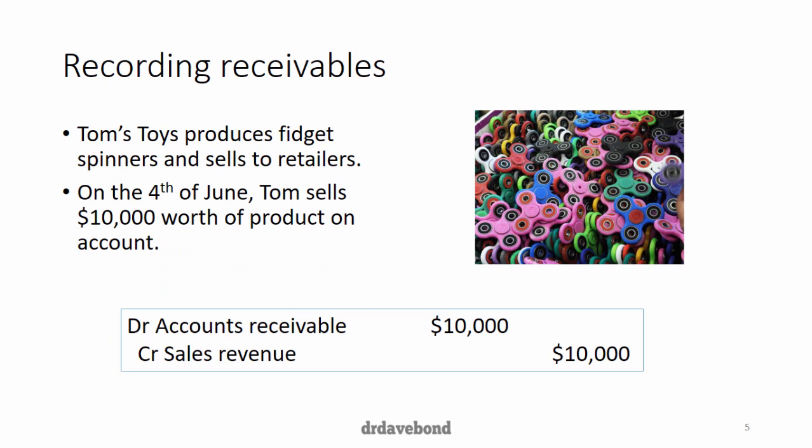How we record receivables initially we've already seen, so this isn't novel. Tom's Toys produces fidget spinners and sells them to retailers. On the 4th of June, Tom sells $10,000 worth of product on account — that's the sticker price, how much they'll actually receive, not the actual value of the inventory itself. So we debit accounts receivable, the asset, $10,000, and credit sales revenue to reflect that the good has been sold.